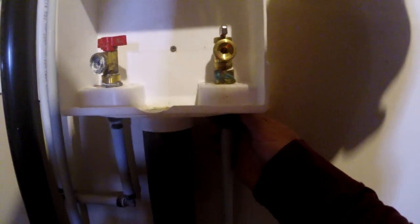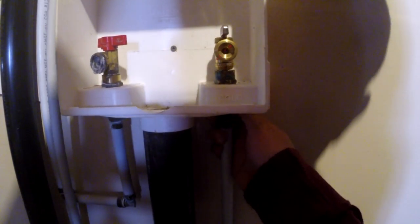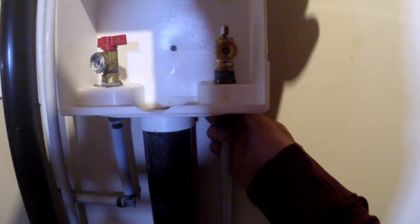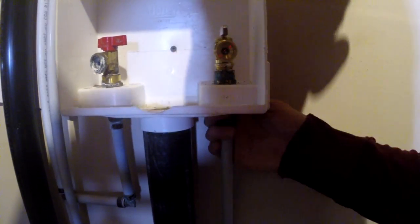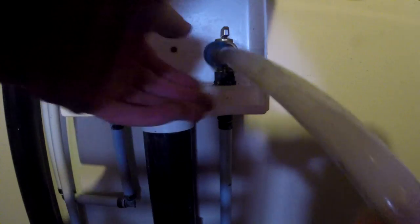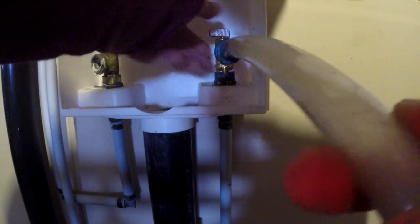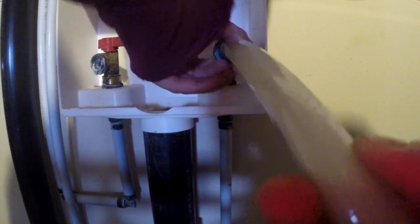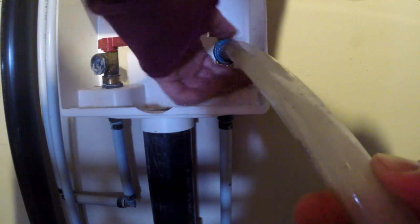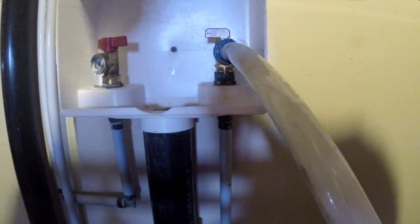There we go, tighten the piece in behind and put this piece back on for the pressure test, turn it off.